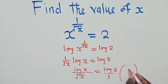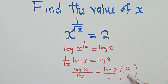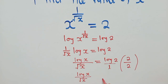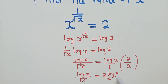We shall multiply by 2 over 2. Since 2 over 2 equals 1, it won't change any meaning. When we multiply, we get log x over root of x is equal to 2 log 2 over 2. We have maintained the meaning — 2 over 2 is still 1.